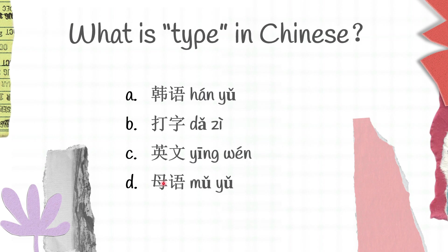The next one: What is type in Chinese? We have A 韩语, B 答字, C 英文, D 母语. I will give you time to think first. 韩语 is Korean language, 答字 is type, 英文 is English, 母语 is mother tongue.